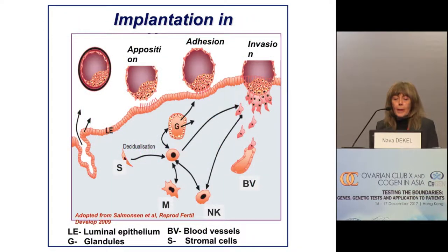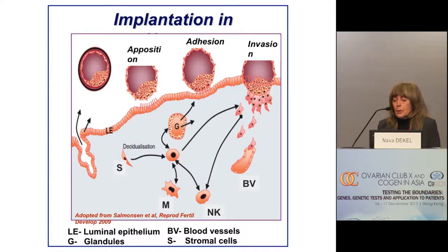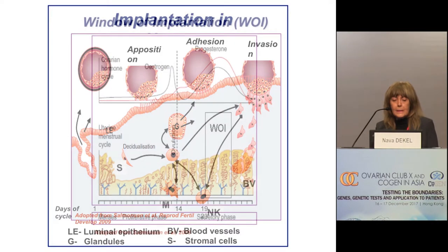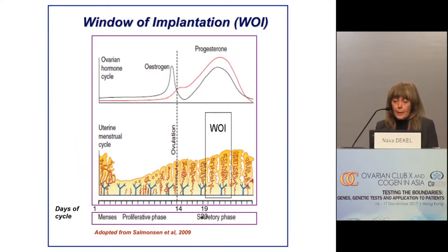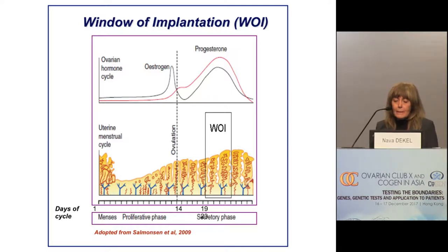Implantation in humans is initiated by apposition, followed by adhesion and invasion of the blastocyst into the uterine wall. Each of these steps will only take place in a receptive uterus, and in humans the uterus acquires its receptivity between day 19 and 21 of the menstrual cycle, also known as the window of implantation.